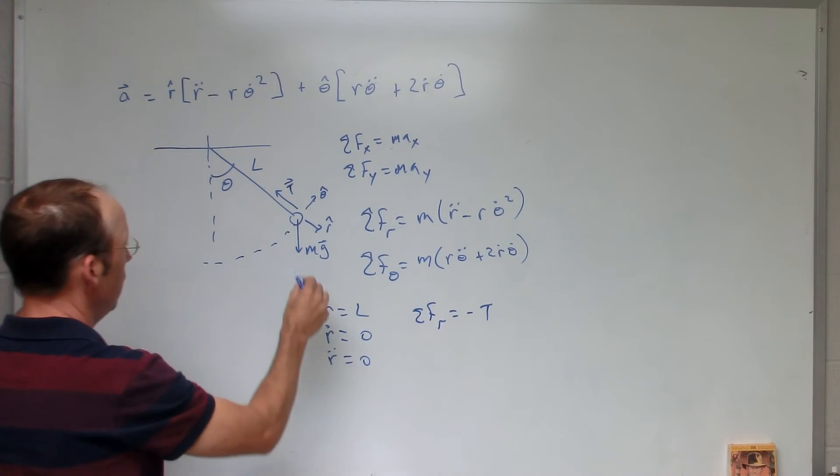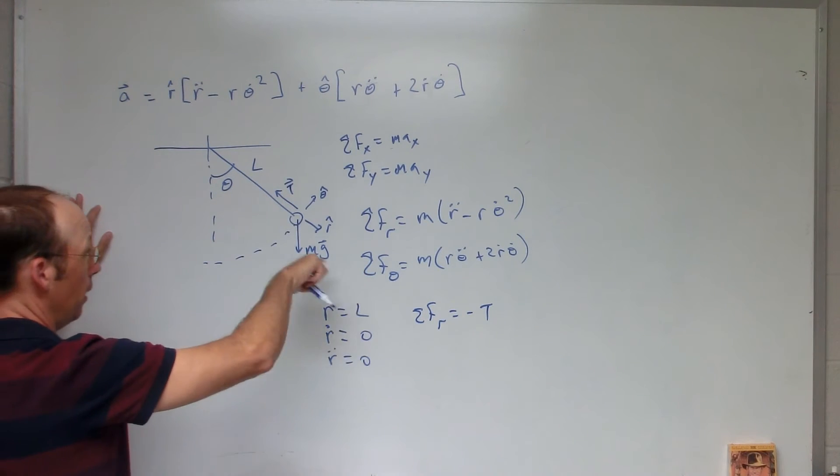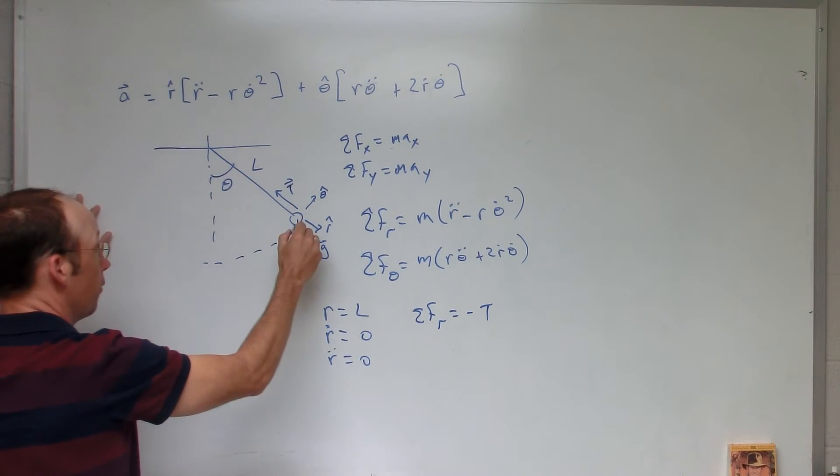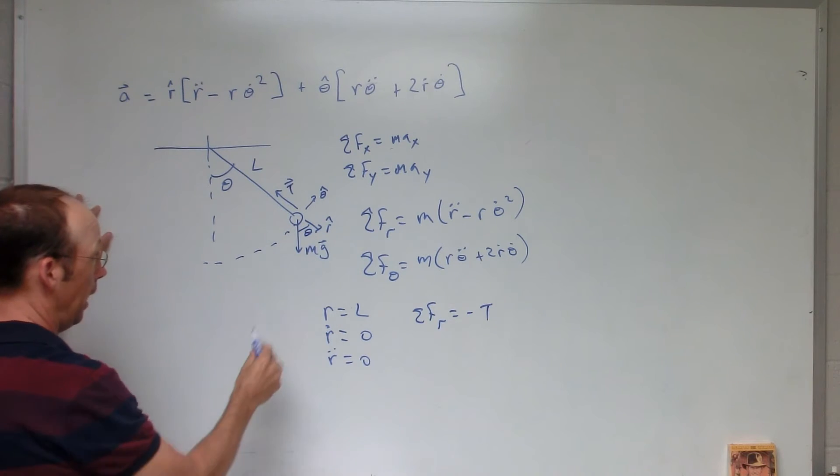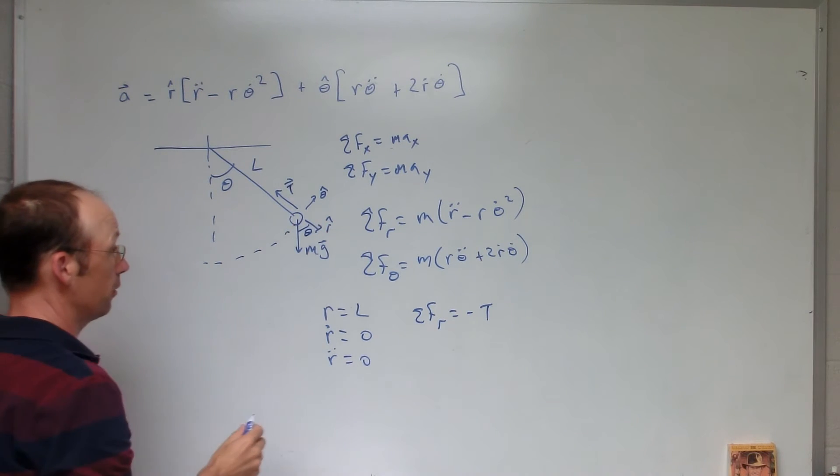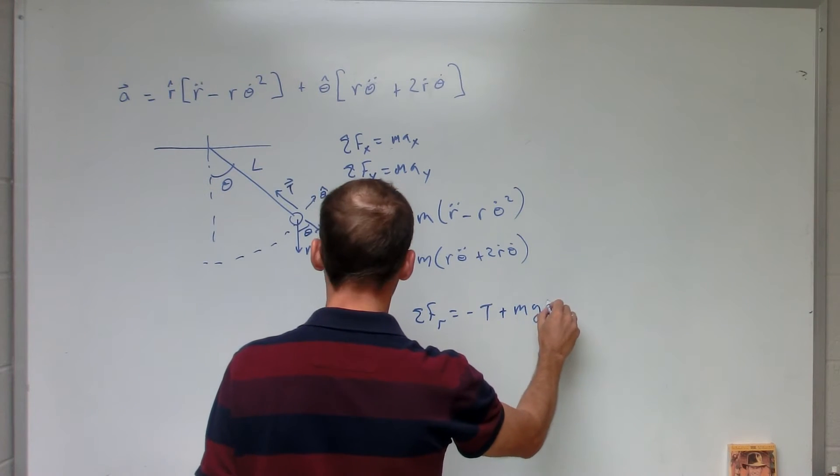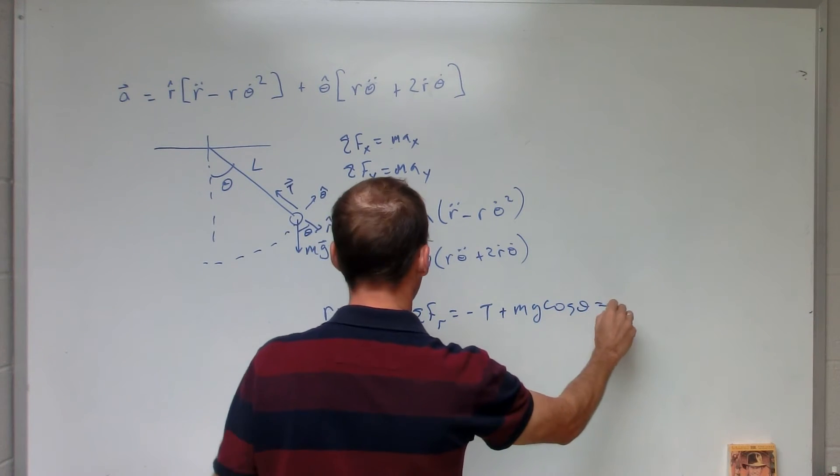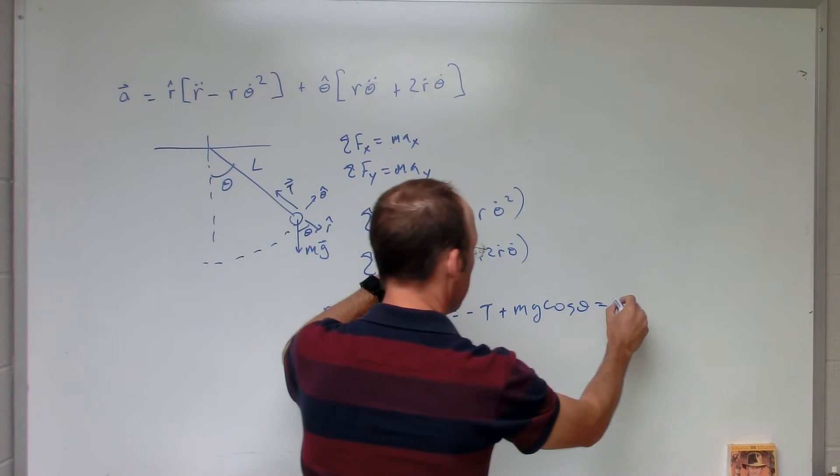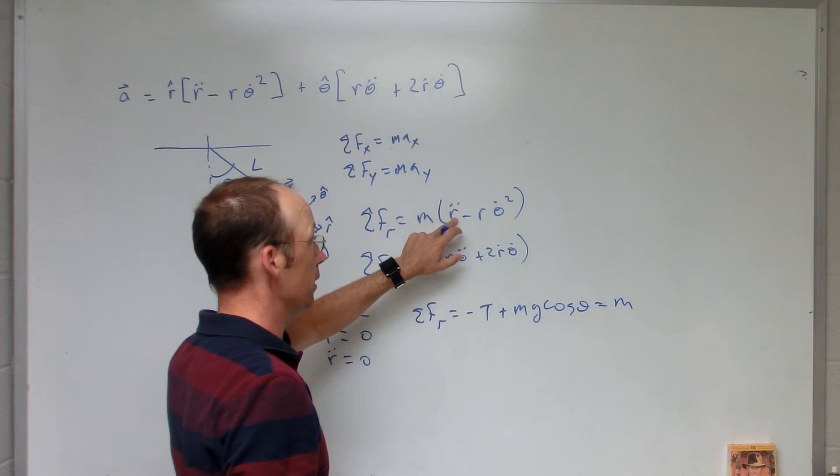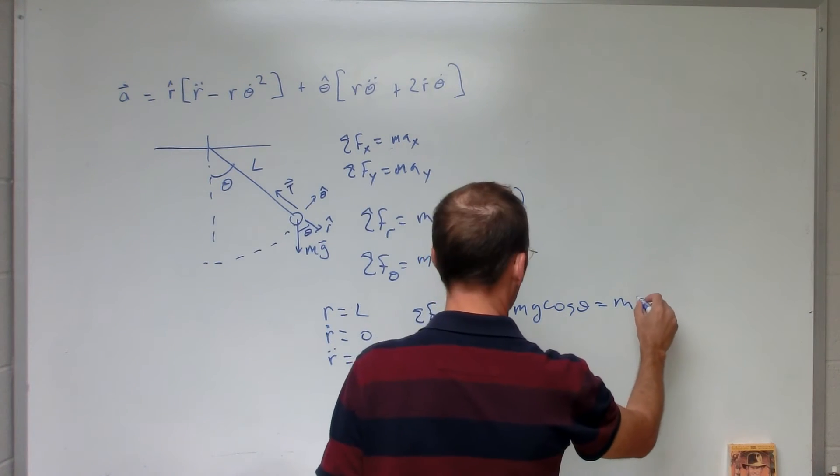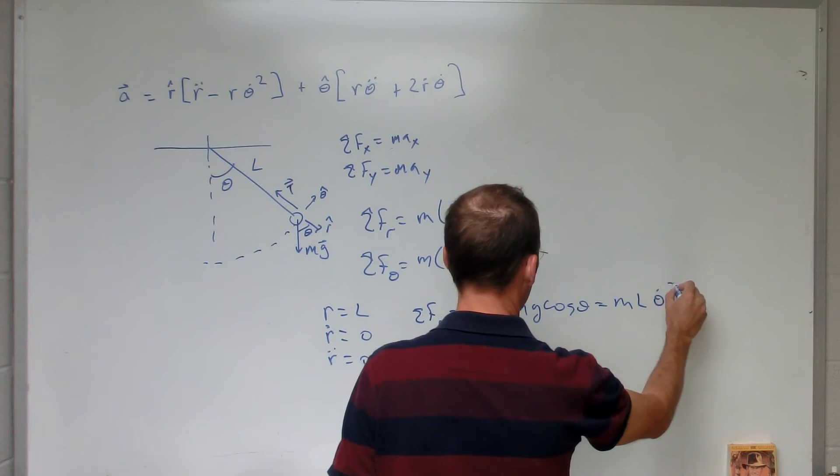So I have the sum of the forces in the r. It's going to be negative tension. And then I have gravity pulling that way, but only a part of it. If that angle is theta, that angle is theta. So I want the adjacent side. So this is going to be plus mg cosine theta. And now that's going to be equal to m, r double dot is 0. So I get m times L theta dot squared.